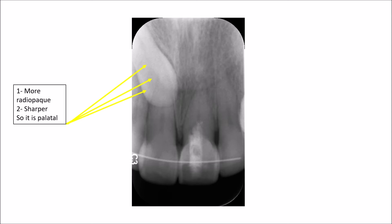Taking another look at the radiograph, what we will do is compare the radiopacity and the sharpness of this tooth in reference to the adjacent teeth. The adjacent teeth are naturally present in the middle of the alveolar bone. This canine appears more radiopaque and sharper than the two central incisors and the lateral incisor. Being more radiopaque and sharper than the other teeth means that this tooth is located closer to the film — meaning it is located in a palatal position. If it is possible to palpate the tooth clinically, you might find the bulge of the crown, but from the radiograph we can say this tooth is in a palatal position.